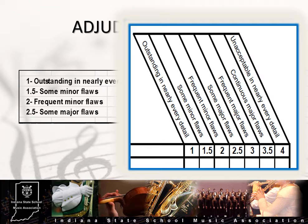Remember that the points you assign in the rubric column should be an accurate reflection of the comments you provided in the middle column. Positive, complimentary comments followed by a 2.5 given in a category is confusing to the director and performers, and is also difficult to justify. Conversely, a rubric with all ones and no supportive comments is equally frustrating for a director and ensemble looking for a thorough formative assessment.